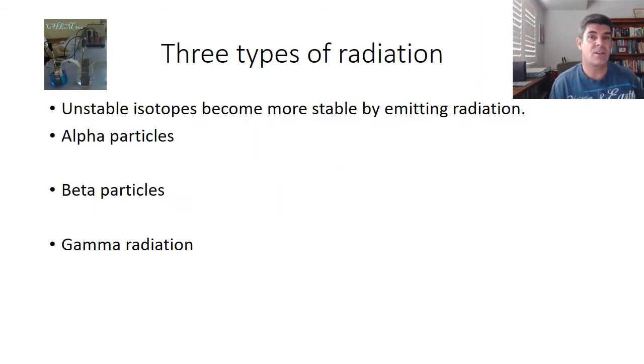This is an introduction to radioisotopes, which are unstable isotopes of different elements that become more stable by emitting radiation. We've looked at different types of isotopes in previous videos, so now we need to focus on the types of radiation released as a result of the radioactive decay of an unstable isotope.